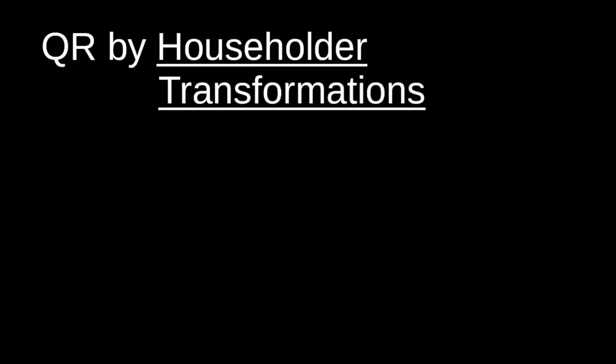The next method we're going to discuss for computing a QR matrix decomposition is through the use of Householder transformations. I'll forewarn you that this method is not necessarily straightforward, so let me explain what we're going to do more generally and then we'll dive into the details as we go through the code.